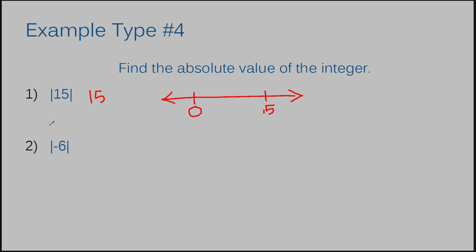Example number 2 is negative 6. This is going to be the same, but in reverse. So if I have a zero here, I can go 1, 2, 3, 4, 5, and 6 notches to the left, and that tells me there are 6 spaces between negative 6 and 0, meaning the absolute value of negative 6 is 6 — positive 6. I do want to point out that an absolute value can never be negative. It must always be positive, because the absolute value is a distance. You can never measure a distance negatively — a distance has to be positive.